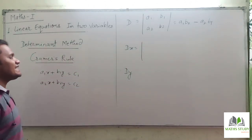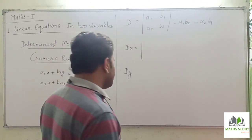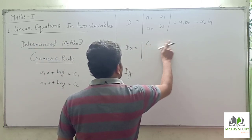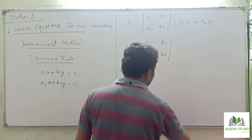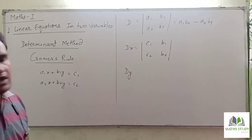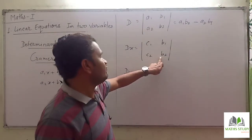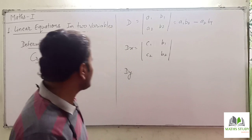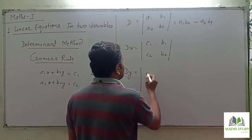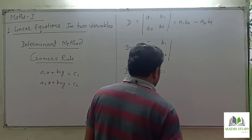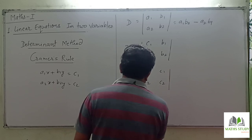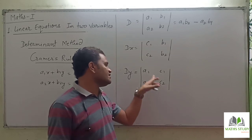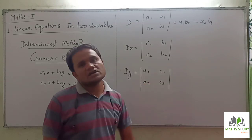To find Dx (D suffix x), we take C1, B1, C2, B2, giving: Dx = C1×B2 − C2×B1. To find Dy (D suffix y), we take A1, C1, A2, C2, giving: Dy = A1×C2 − A2×C1.